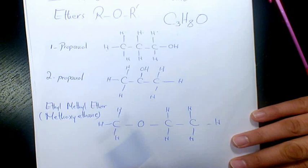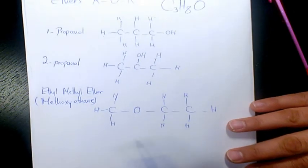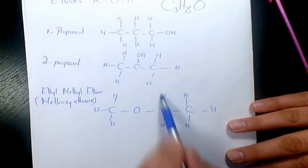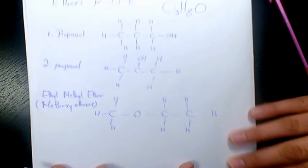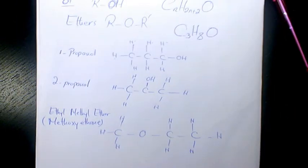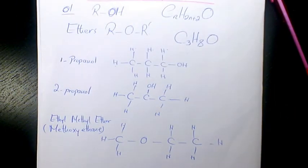This one is also C3H8O — one, two, three carbons and eight hydrogen atoms. So these are the three isomers of C3H8O or propanol: 1-propanol, 2-propanol, and ethyl methyl ether. I hope you enjoyed this video — please leave me a comment if you have any questions. Thank you for watching and have a great day.